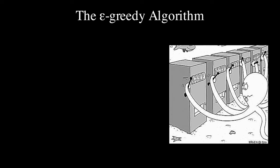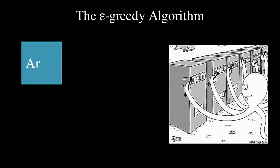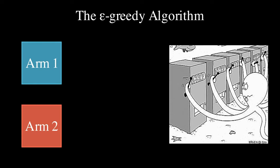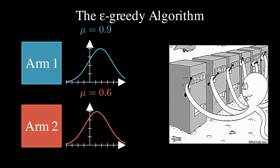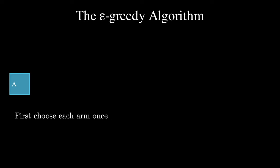Let's take a look at an example with two arms. Let's assume the rewards for these two arms are 1 sub-Gaussian with a mean of 0.9 and 0.6. We first play each arm once.